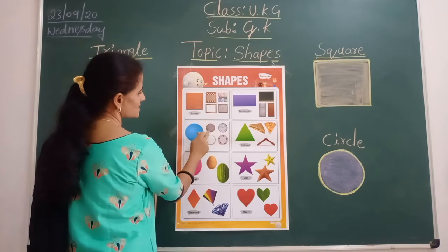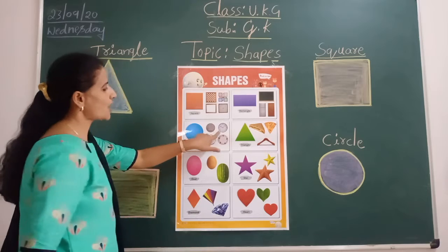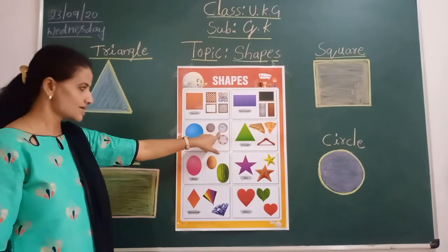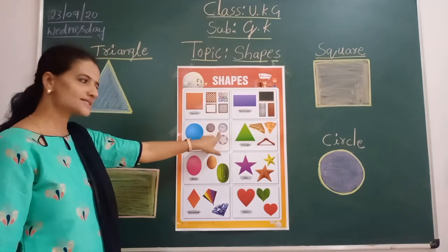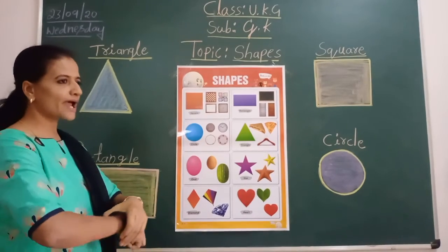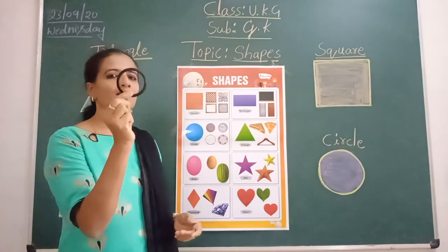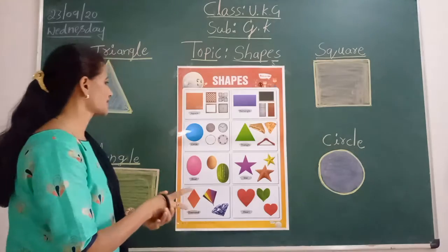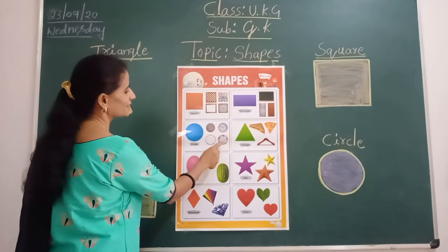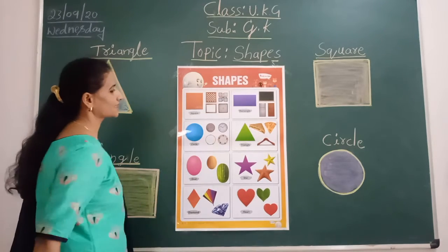What is this? Wall clock. So, wall clock also shape in circle. Bangle — see children, bangle also shape in circle. Plate — plate also shape in circle.